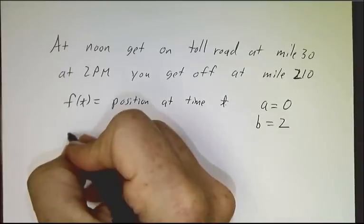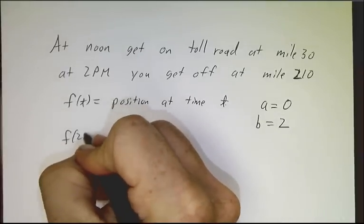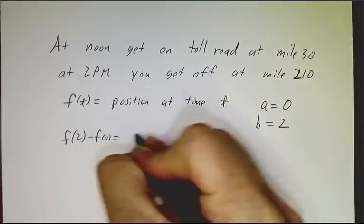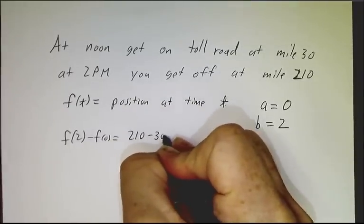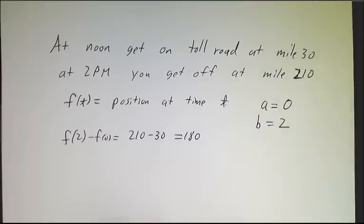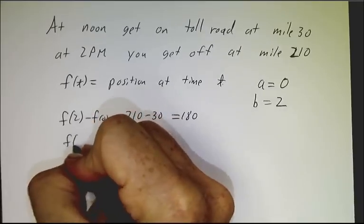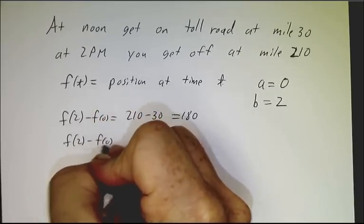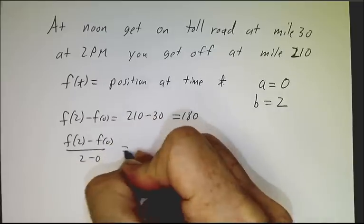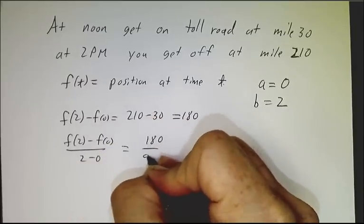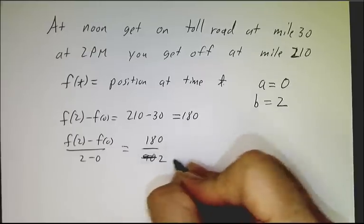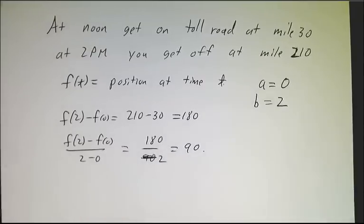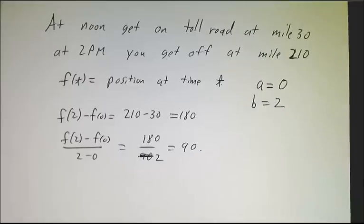And we say the distance you traveled is 180 miles. Your average speed is 90 miles an hour, and that's higher than the speed limit.